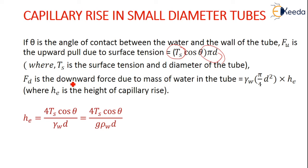So what is F_d? It is the downward force which is due to the mass of the water. How it is calculated? γ_w into area π/4 d² into height h_c. That is the force due to mass.